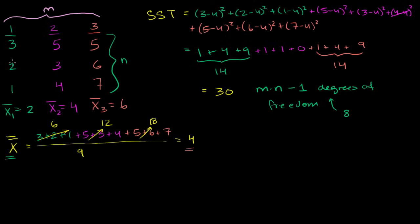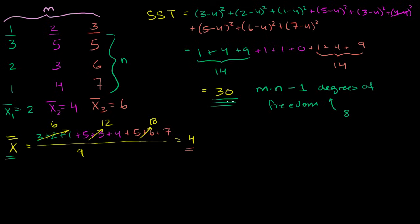I'll leave you here for this video. In the next video, we're going to figure out how much of this total variation comes from variation within each group versus variation between groups. There's a variance for the entire sample of 9, but some of that variance might come from being in different groups versus within a group. We'll calculate those two things and see that they add up to the total sum of squares.